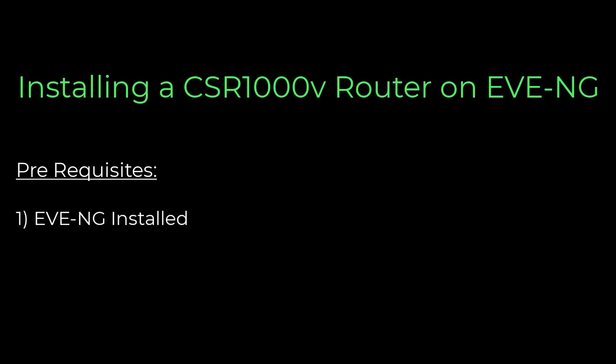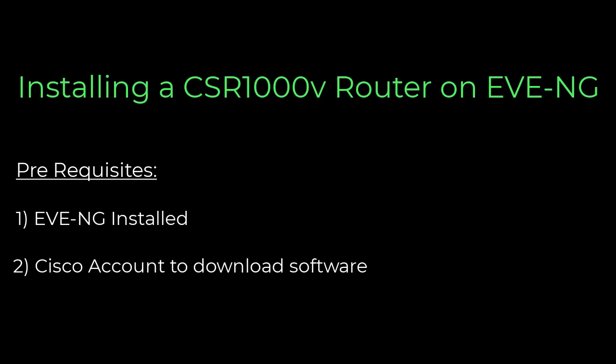Number one, you need an installed version of EveNG. The free community edition will work just fine and that can be downloaded off their website. Number two, you'll need a Cisco account with the correct privileges to download the ISO image. And number three, some type of FTP software.